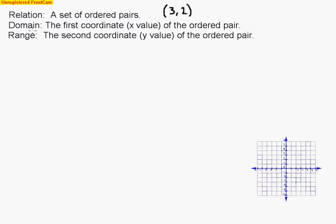Well, in a relation, again, is this set of ordered pairs. So it's one ordered pair or more. The domain of a relation is the first coordinate. Remember I said the first coordinate was the x value. So here is the domain, it's 3. So that's the first value of the ordered pair.